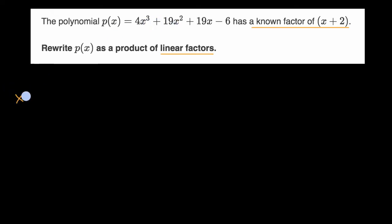Let's divide (x + 2) into our polynomial. So it's 4x³ + 19x² + 19x - 6.